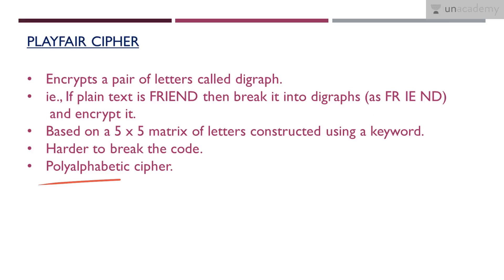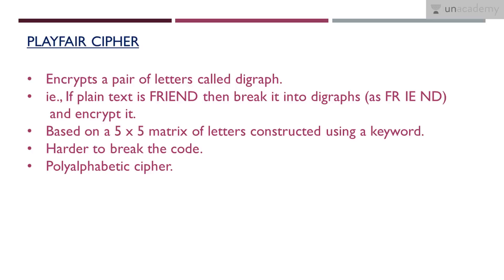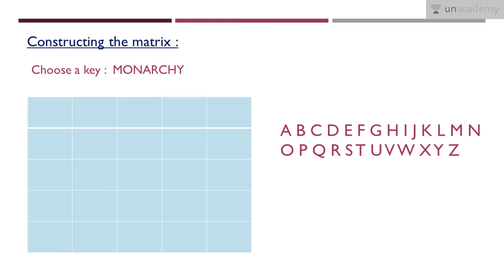This is a polyalphabetic cipher. Once we study how to encrypt and decrypt using this method, we will discuss that further. Before we study how to encrypt or decrypt, we need to study how to construct the matrix. We studied that this is based on a 5x5 matrix of letters, so let's see how to construct this matrix. For that, first we need a keyword.